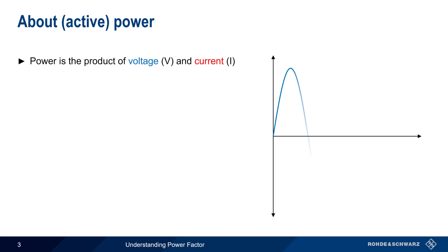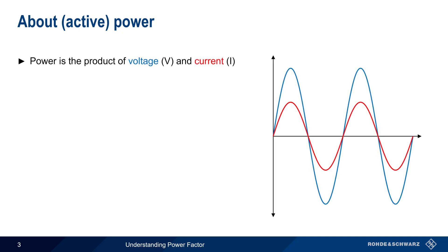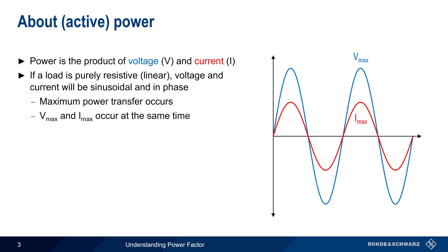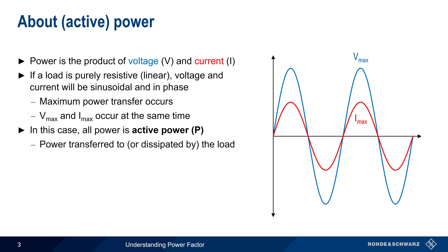Let's start by reviewing power. As you should already know, power is the product of voltage and current. If the load is purely resistive or linear, both the voltage and the current will be sinusoidal and in phase. Maximum power transfer will occur because the voltage and current maximums occur at the same time. In this situation, all power is active power, usually abbreviated P. Active power is defined as the power that is transferred to or dissipated by the load — that is, the power that performs so-called useful work. Active power is measured in the familiar unit of watts.